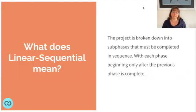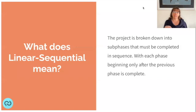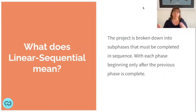So what does linear sequential mean? It means the project is broken down into distinct sub-phases that need to be completed in sequence. Before the next phase can start, the previous phase has to be completed. Linear sequential also indicates that you can't loop back regularly — once you've completed a stage and moved on to the next, you continue along that linear sequence. You don't have the ability to go back and revisit; if you do, you need to start again.